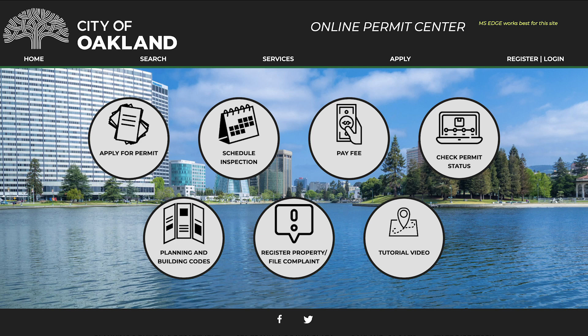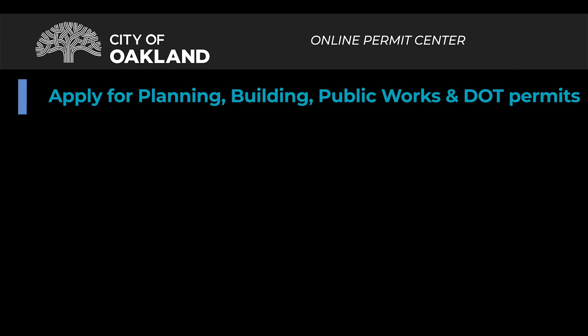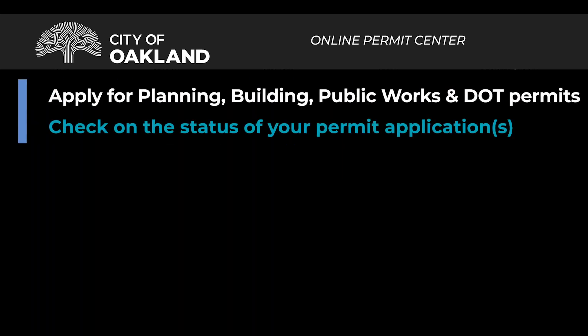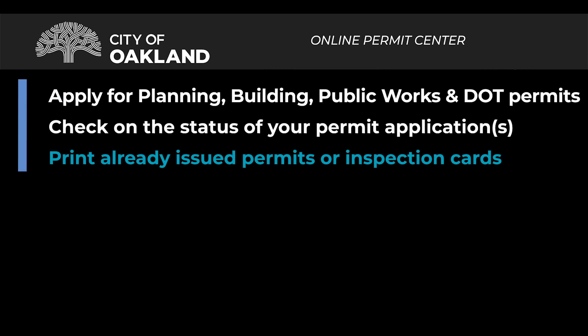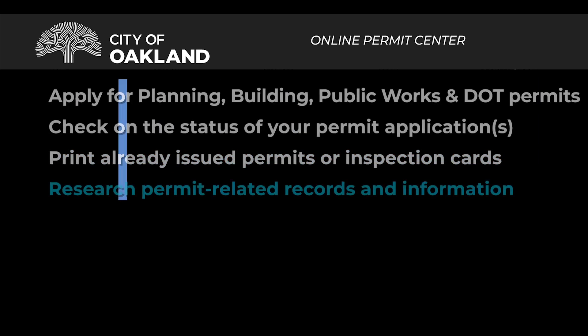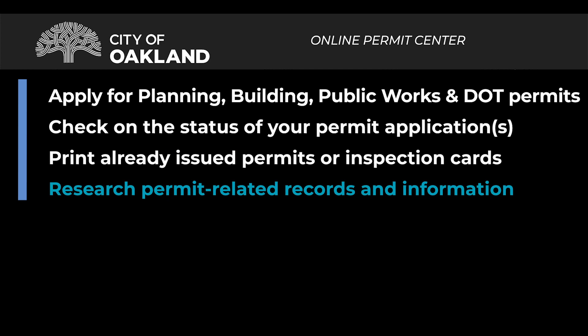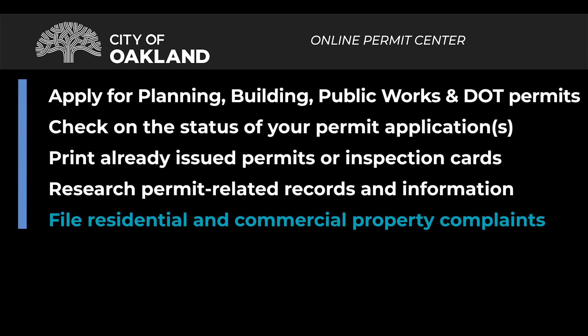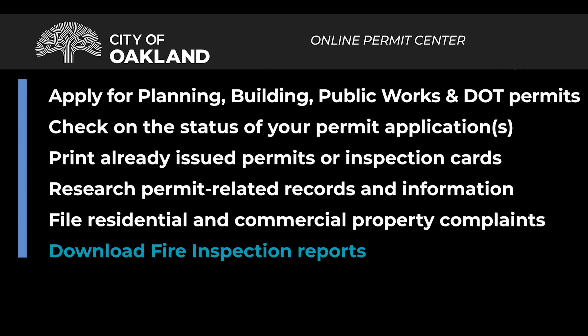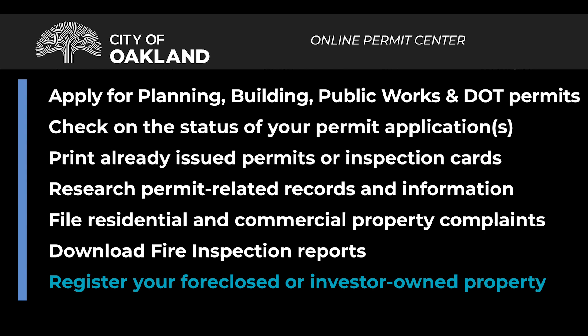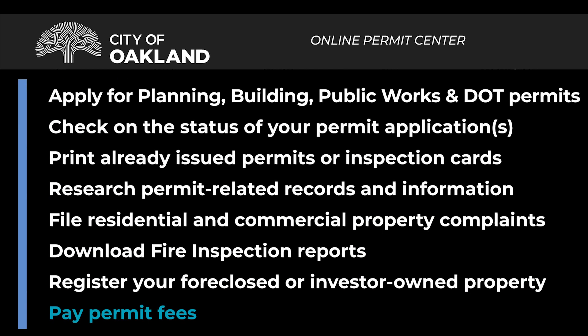Welcome to the City of Oakland's Online Permit Center. Our Online Permit Center allows you to apply for a broad range of planning, building, public works, and Department of Transportation permits. In addition, you may check on the status of your permit applications, print already issued permits or inspection cards, research permit-related records and property information, file residential and commercial property complaints, download fire inspection reports, register your foreclosed or investor-owned property, and pay permit fees.